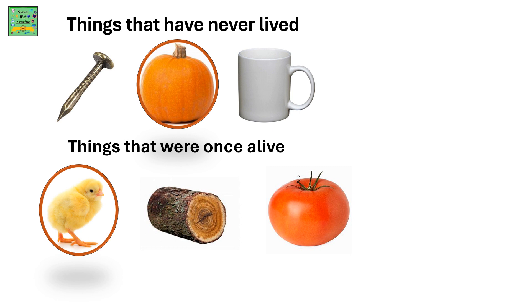In the group of things that were once alive, a chicken is a living thing and does not belong to this group — that's why it has been circled. However, the wood and the tomato were once alive.